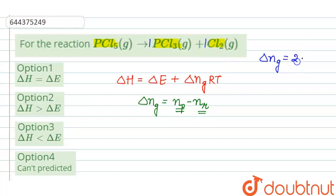so 2, minus and in the reactant side there is 1 mole of PCl5 gas, so it will be 1.